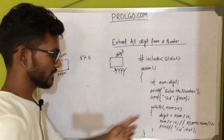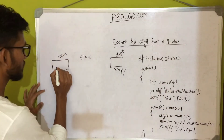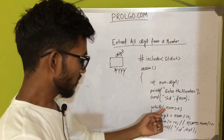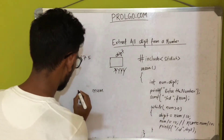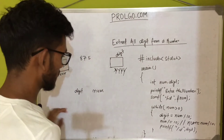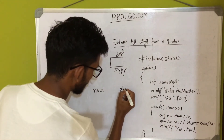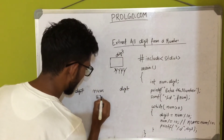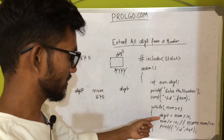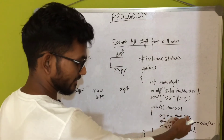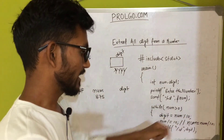I've declared the variable 'number' and 'digit'. I've entered 875 and stored it into the num variable. Now the while loop checks: is number greater than 0? The number is 875 — yes, it is greater than 0, so we enter the loop.